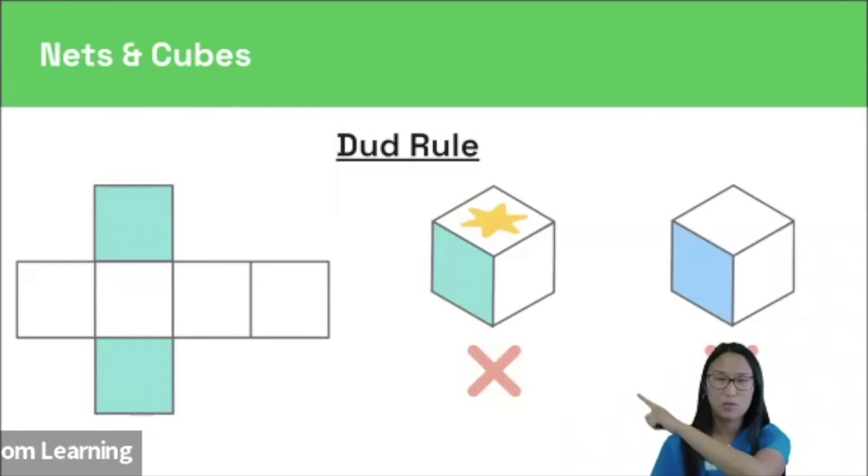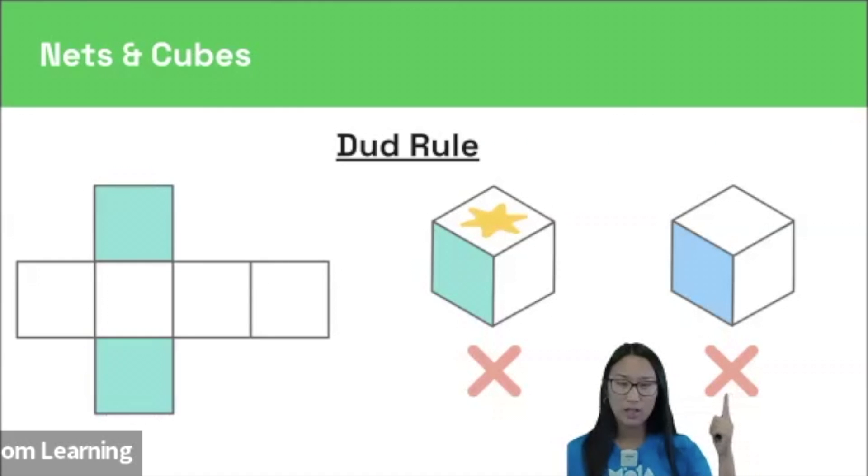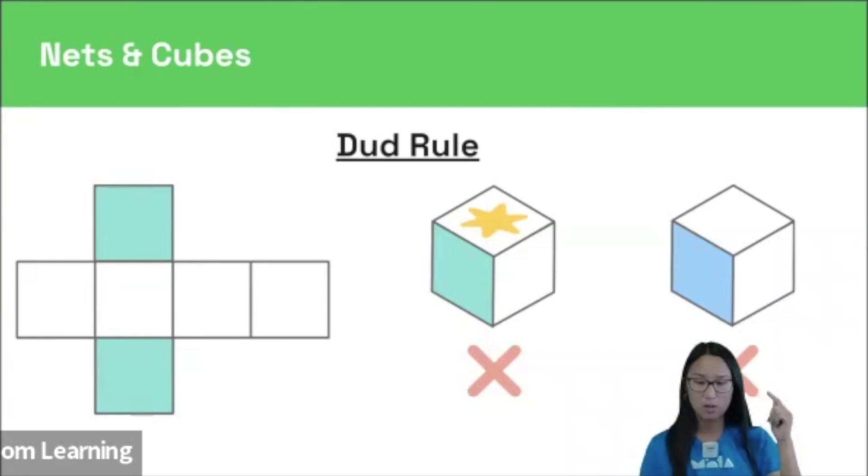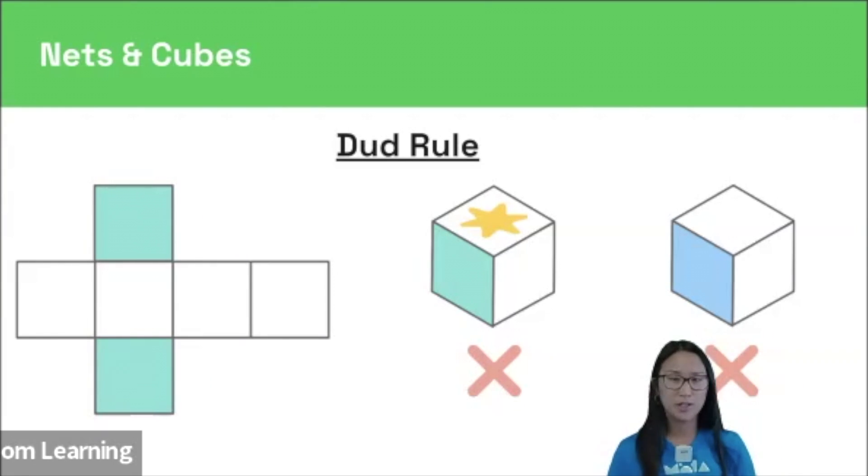So here, this one is wrong. There's no star on our net, so we know that we can rule it out. And in this example over here, the net doesn't contain any blue faces, so we can instantly rule out this cube. These guys are dud cubes.